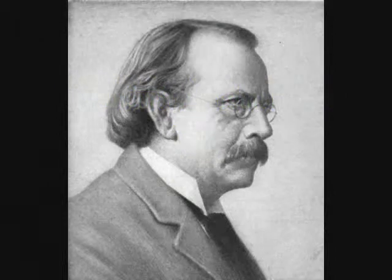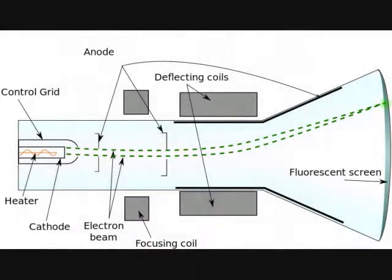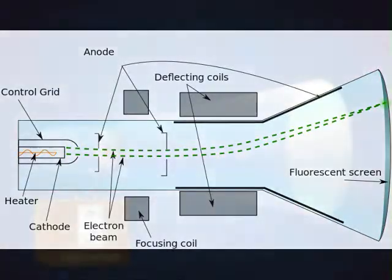J.J. Thompson was a British physicist who was very interested in cathode rays. He wanted to know what they were, what they were made of, and if they had a mass or a charge. In 1897, he did some really important research using cathode ray tubes. Through this research, he was able to conclude that cathode rays are composed of negatively charged particles. We know these particles as electrons, so J.J. Thompson can be credited with the discovery of the electron.